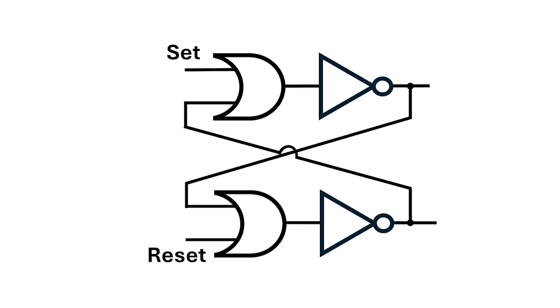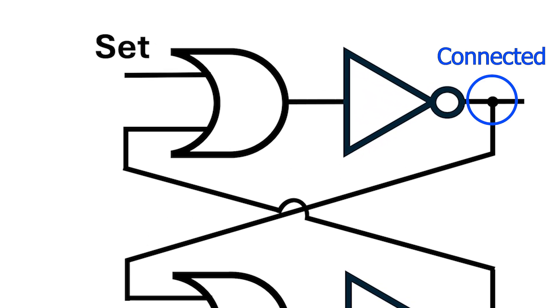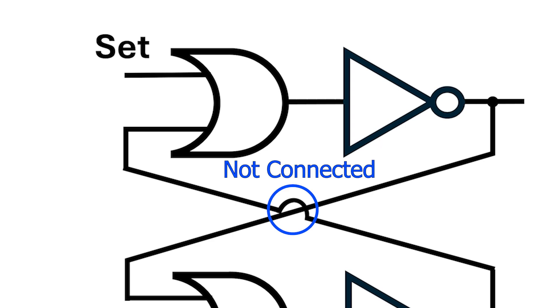While we're here I just want to point something out. This little circle means these wires are connected, whereas here you can see one wire jumping over the other, and that means they're not connected.